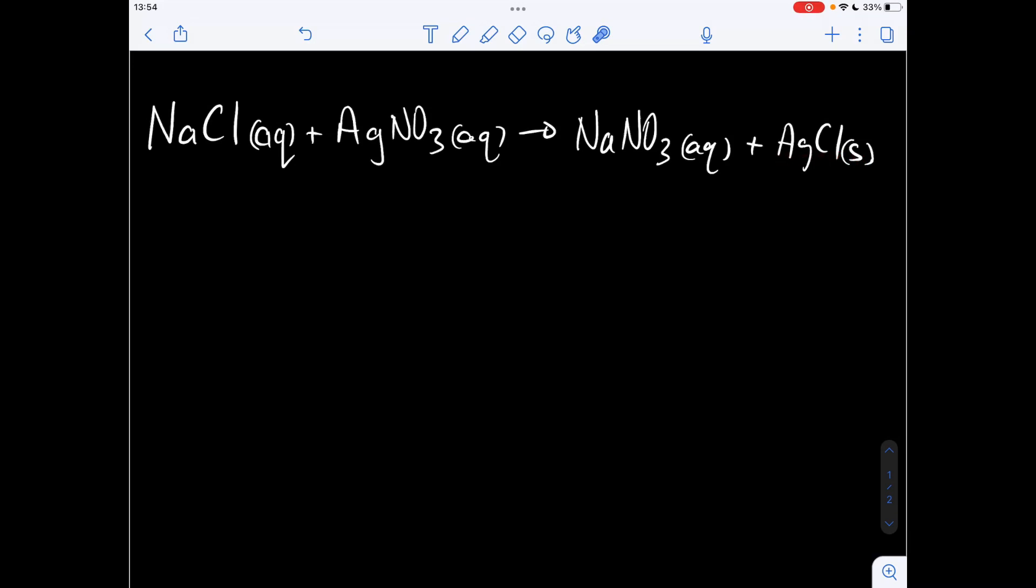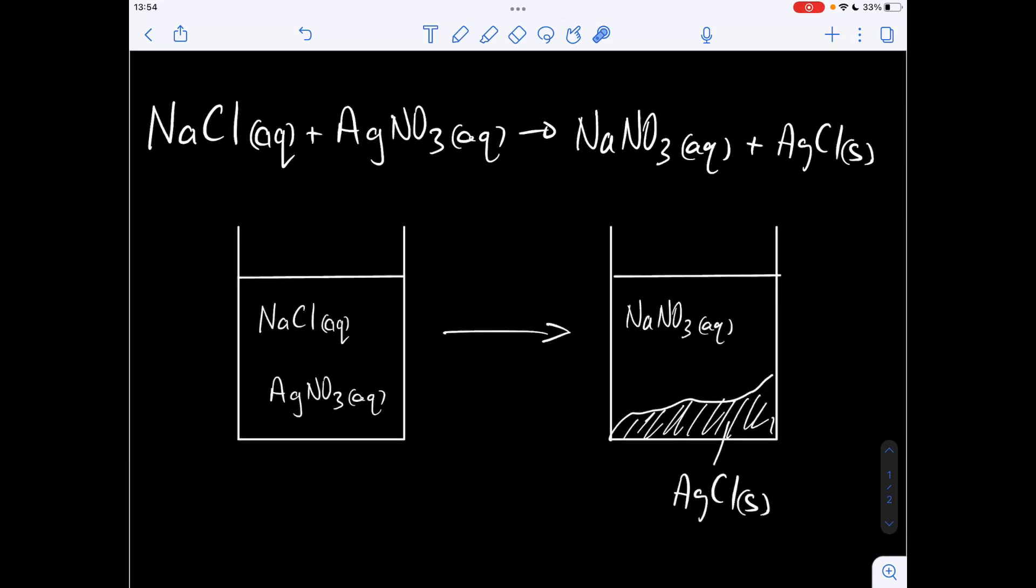So the state symbols I was trying to emphasize there, they're really important. So if you imagine the beaker that this is carried out in, you've got your sodium chloride solution and your silver nitrate solution at the start of the reaction and at the end of the reaction you've got this sodium nitrate solution and this solid precipitate of the silver chloride.